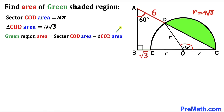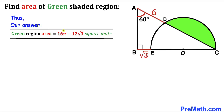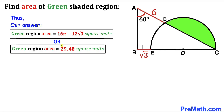Here's our final step. Recalling the equation: green shaded region area = sector COD area − triangle COD area = 16π − 12√3. So our green shaded area is 16π − 12√3 square units, which is approximately equal to 29.48 square units. Thanks for watching and please don't forget to subscribe to my channel for more exciting videos. Bye!